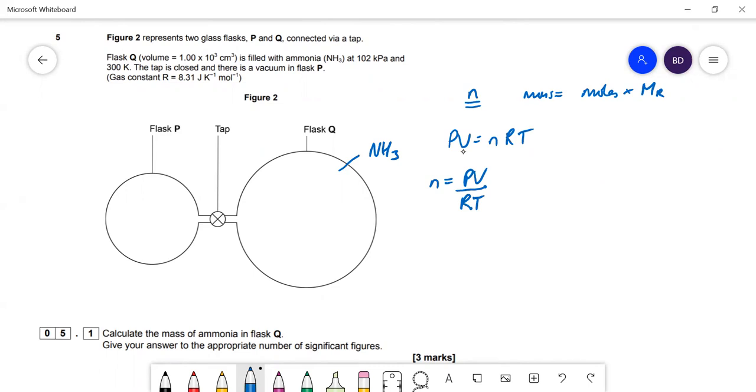Be really careful with units. The volume is 1.0 times 10^3 cm³, convert to m³ by dividing by a million: 1 times 10^-3 m³. The pressure is in kilopascals, convert to pascals. So n equals 102 times 10^3 times 10^-3 over 8.31 times 300, which equals 0.04091 moles.